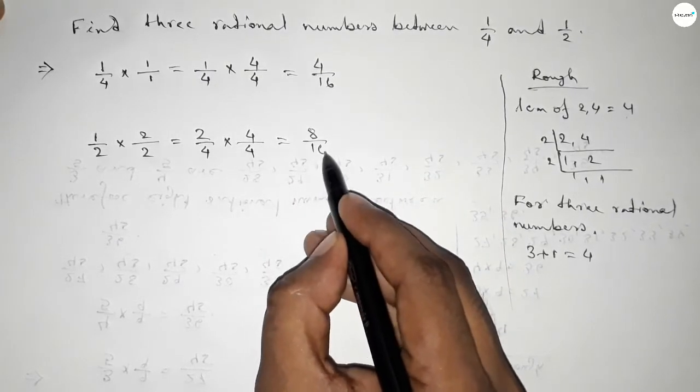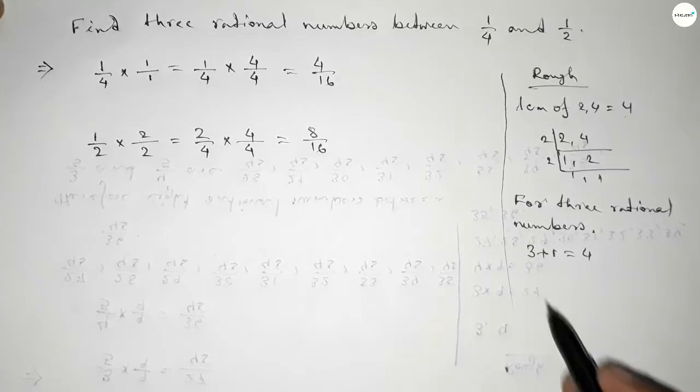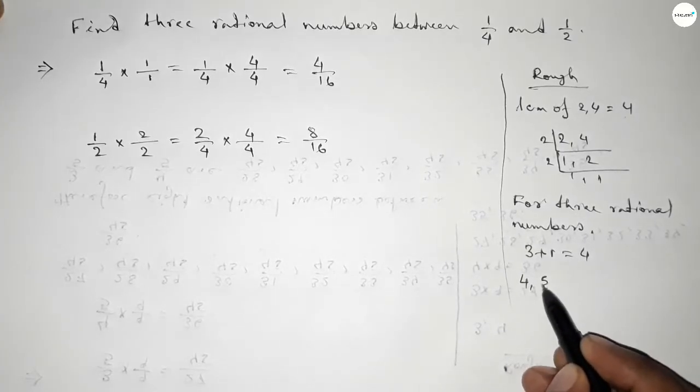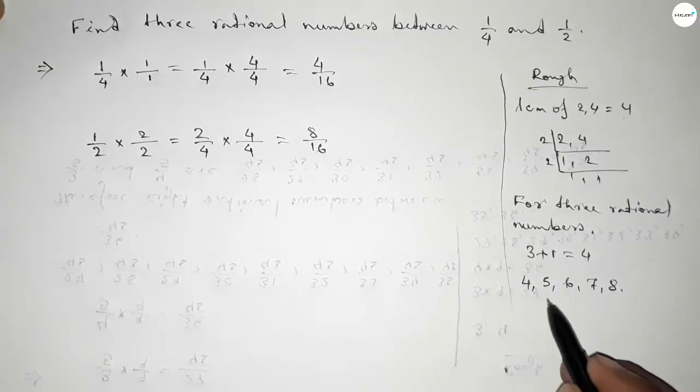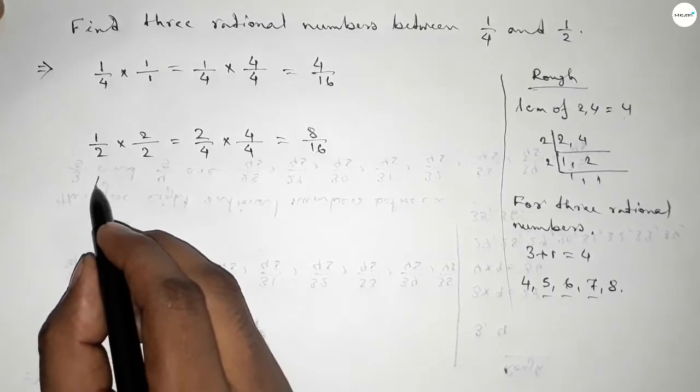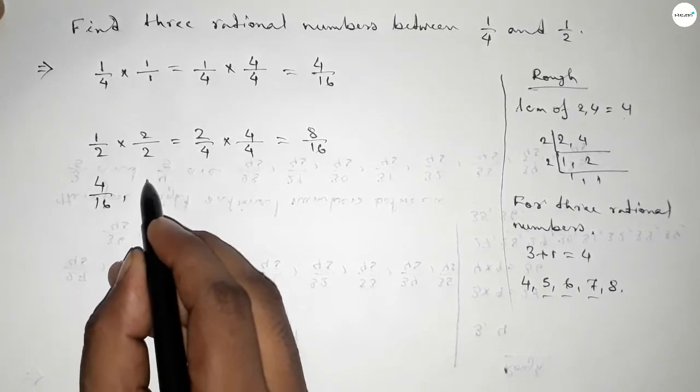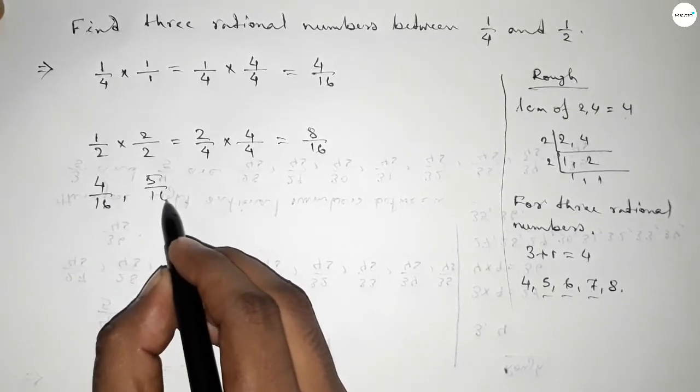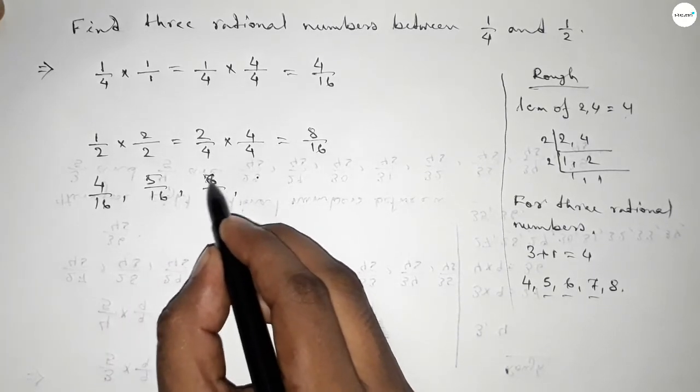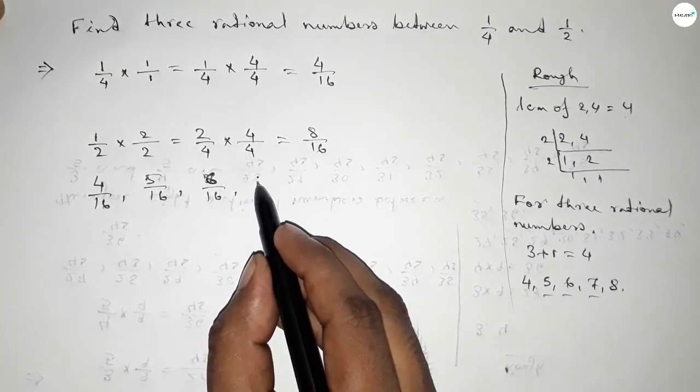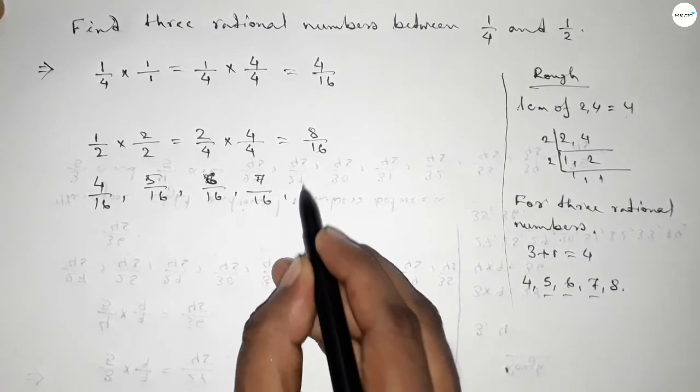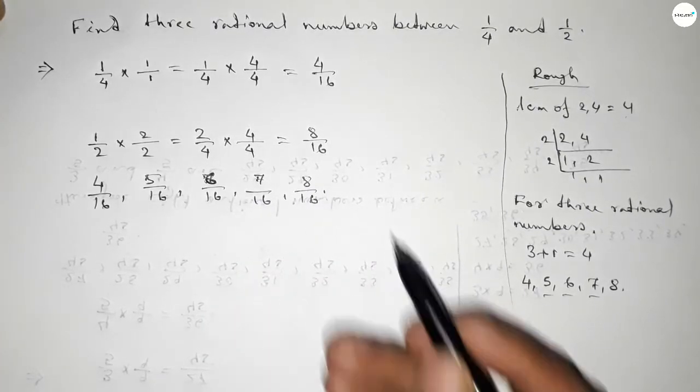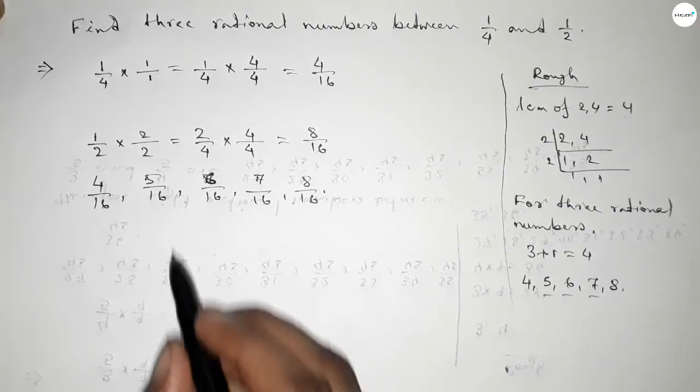Between 4 and 8 we can find three natural numbers, and using these we can form three rational numbers. All the rational numbers are: 4 over 16, 5 over 16, 6 over 16, 7 over 16, and 8 over 16. Among these, the three required rational numbers between 1 over 4 and 1 over 2 are in the middle.